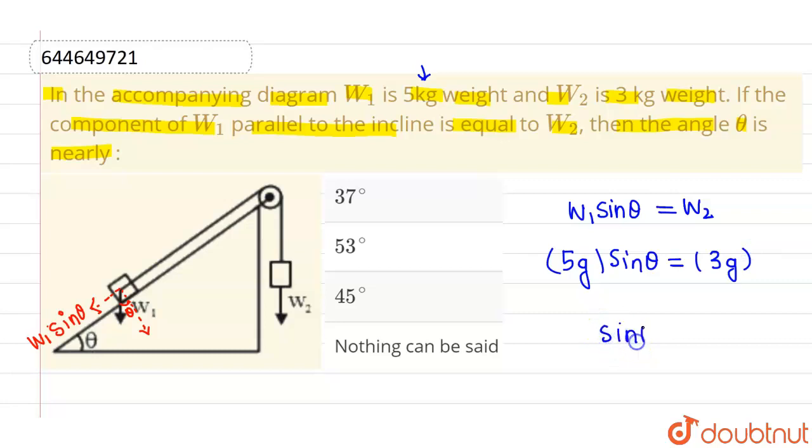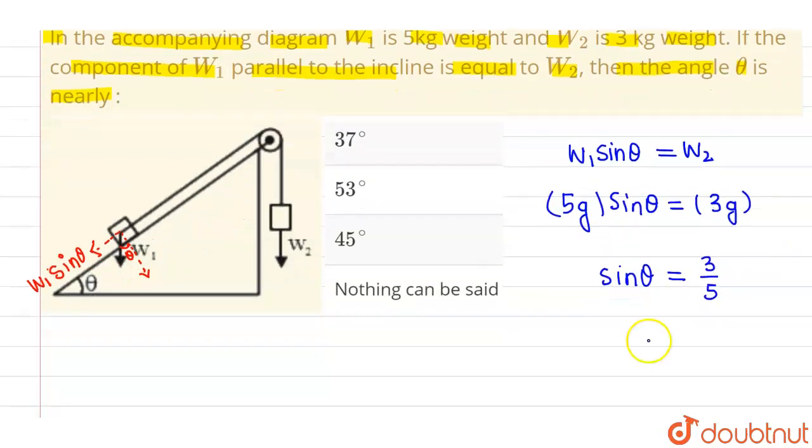So from here, I will be getting the value of sin theta as 3g by 5g, which can be written as 3 by 5. And whenever the value of sin theta is 3 by 5, we know that theta is nothing but 37 degrees approximately.